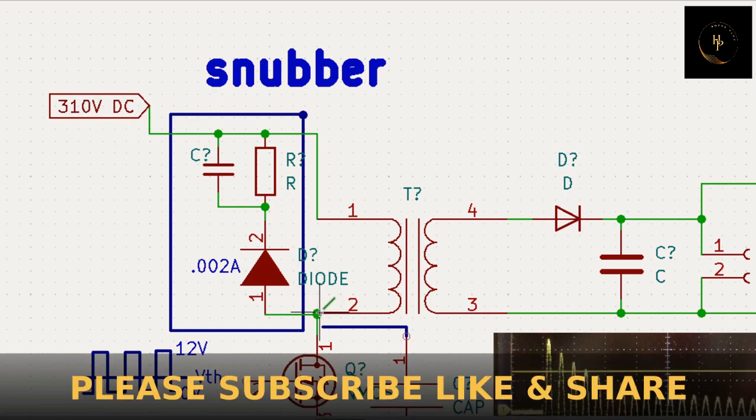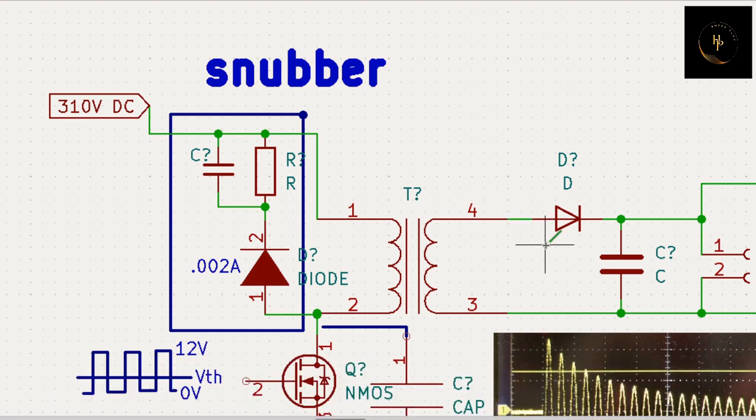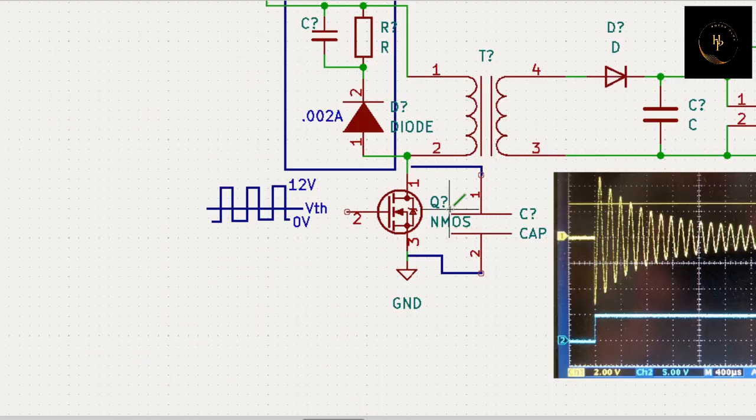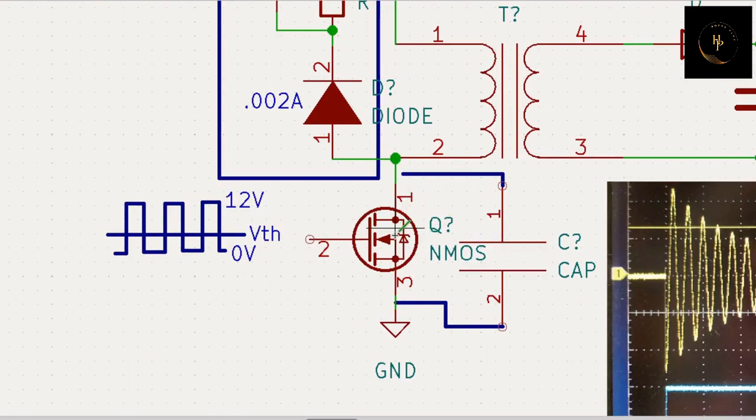You get double the supply voltage from this point, and ringing voltage is 300, I already showed you. So that is 310 plus 300, 610 volts.